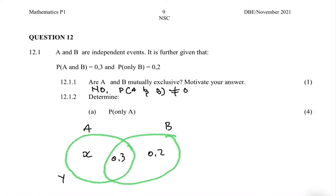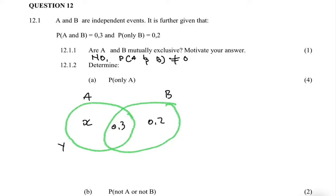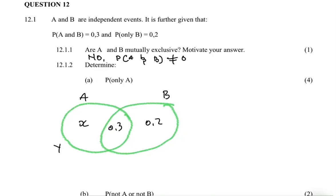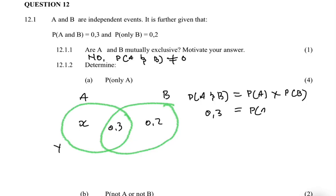Question 12.1.2: determine the probability of only A. We have the probability of only B, the probability of A and B, and we're looking for only A, which is x on our Venn diagram. From the formula for independent events: P(A and B) = P(A) × P(B). We know P(A and B) = 0.3. Once we find P(A), we can use it to find x, since P(A) = 0.3 + x.